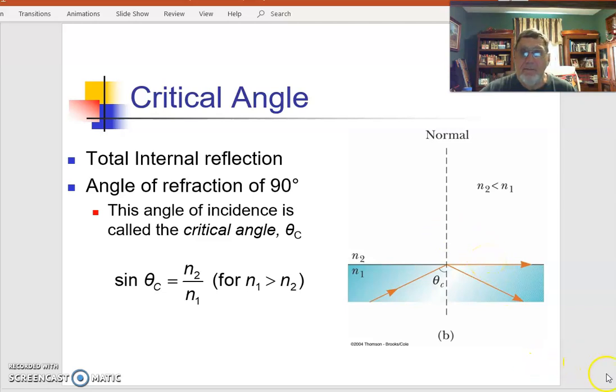The angle at which that occurs is called the critical angle. The critical angle is the ratio of the two indices of refraction - that's just Snell's law applied to your refracted ray being 90 degrees.